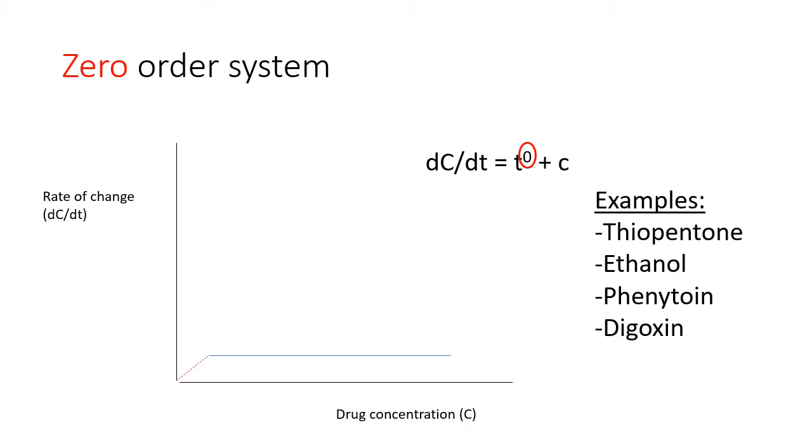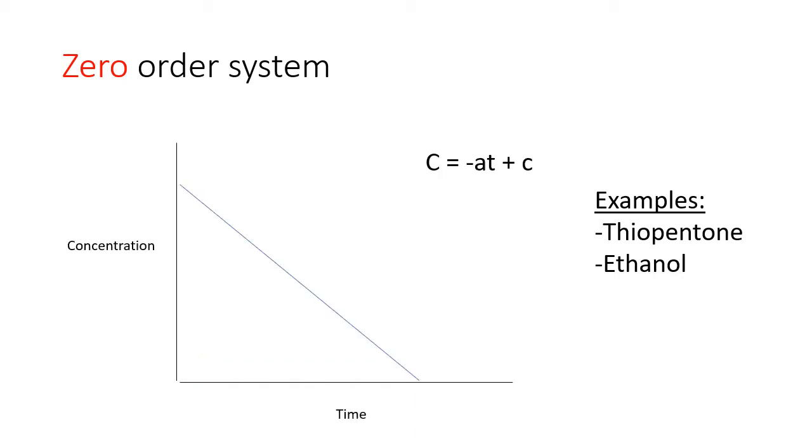Note that if the substrate concentration gets low enough, such that the elimination system is no longer saturated, we then see first-order elimination kinetics. This is the converse of what happens with first-order systems. The elimination curve for this drug, that is, concentration versus time during offset, is a straight line.